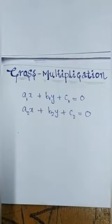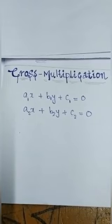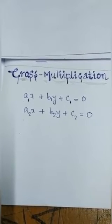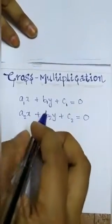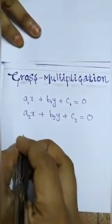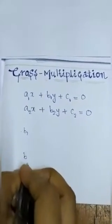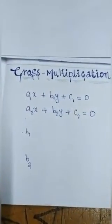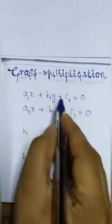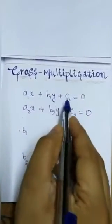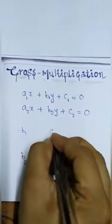Now, what you have to do is write the coefficient of y first. Start from the coefficient of y and end in the coefficient of y. The coefficient of y is b1 and b2. We have written the first coefficient of y.